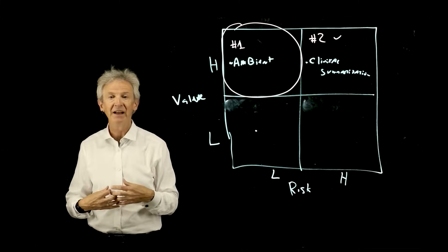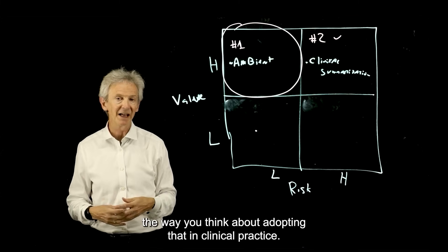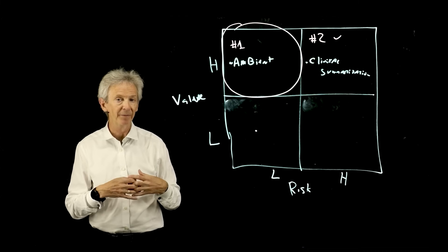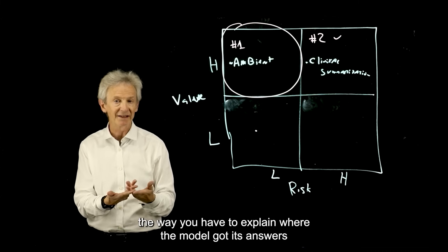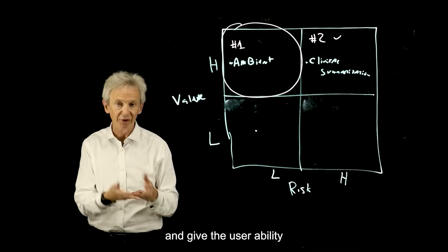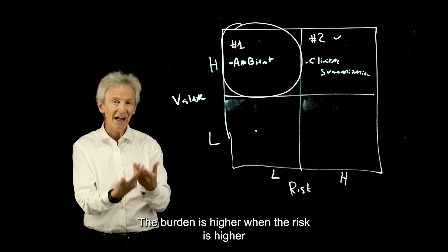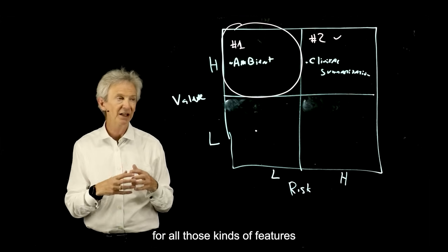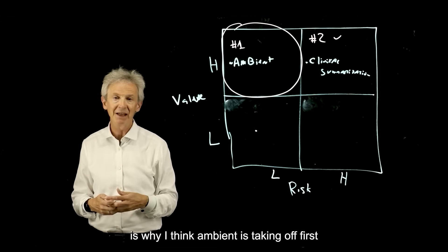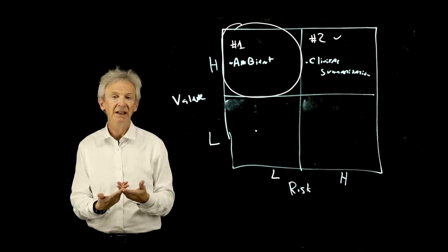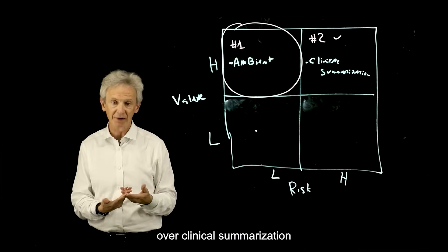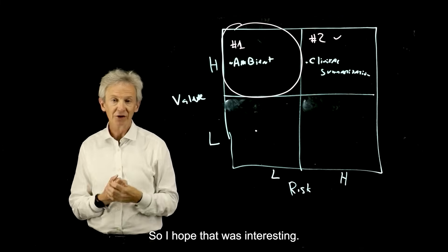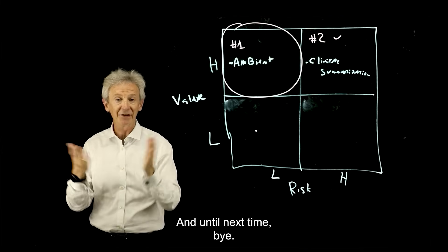So the way you validate that, the way you think about adopting that in clinical practice, the way you manage those risks, the way you have to explain where the model got its answers and give the user ability to double-check everything, the burden is higher when the risk is higher for all those kinds of features. So that is why, I think, ambient is taking off first in healthcare over clinical summarization, because of this risk difference, even though they're both high-value use cases. I hope that was interesting, and until next time, bye.